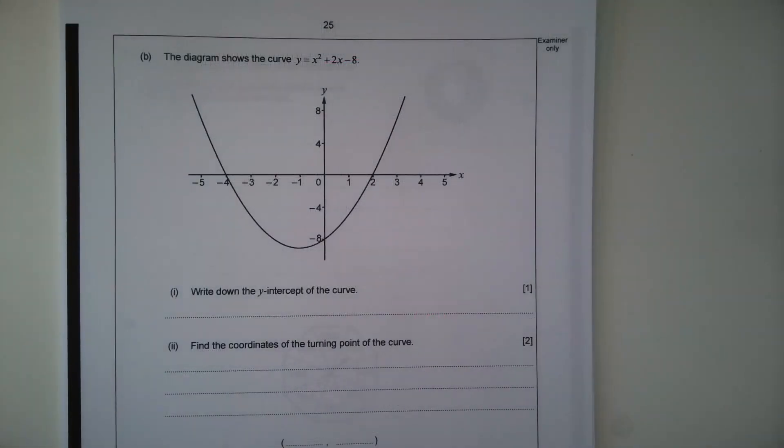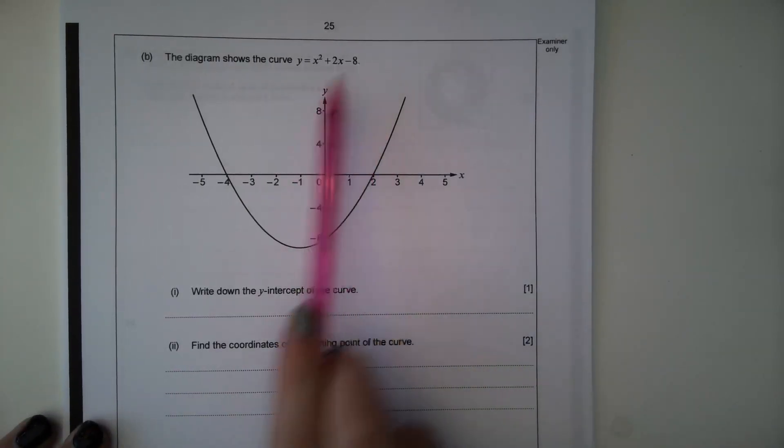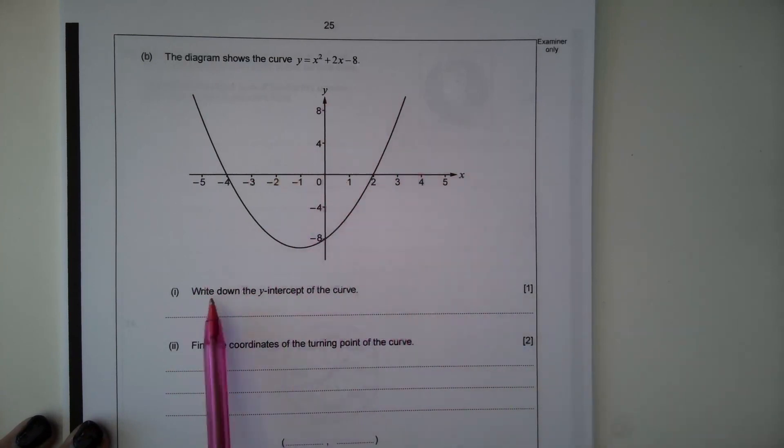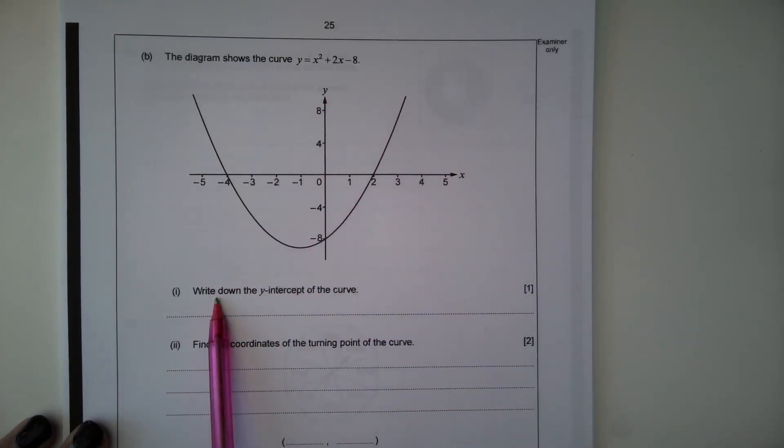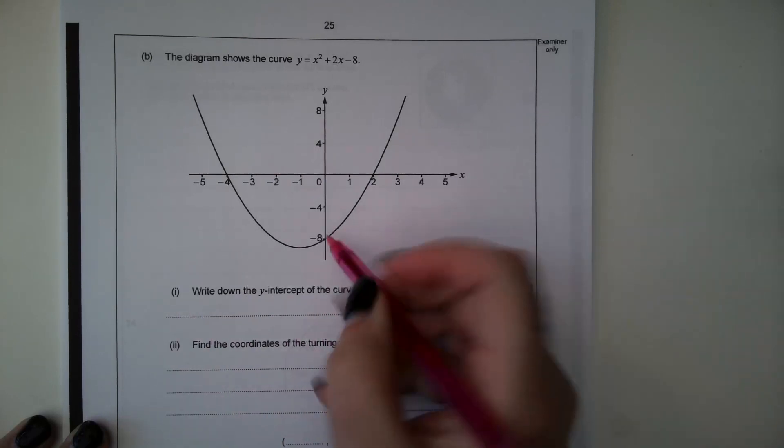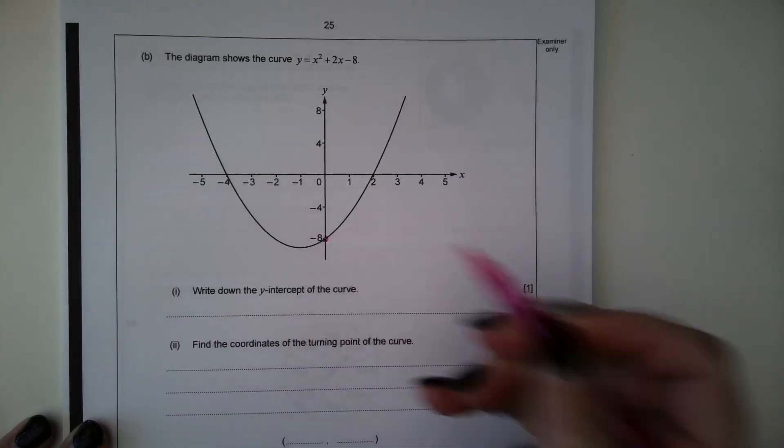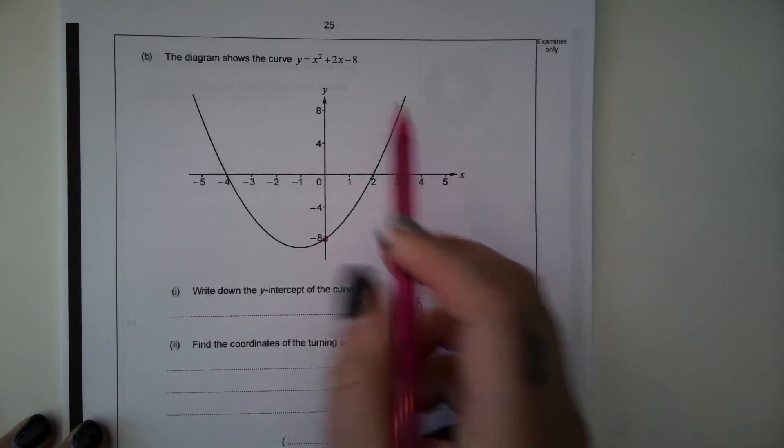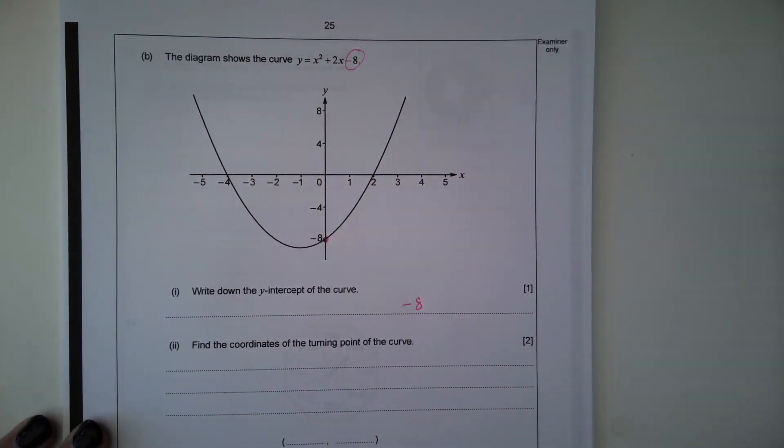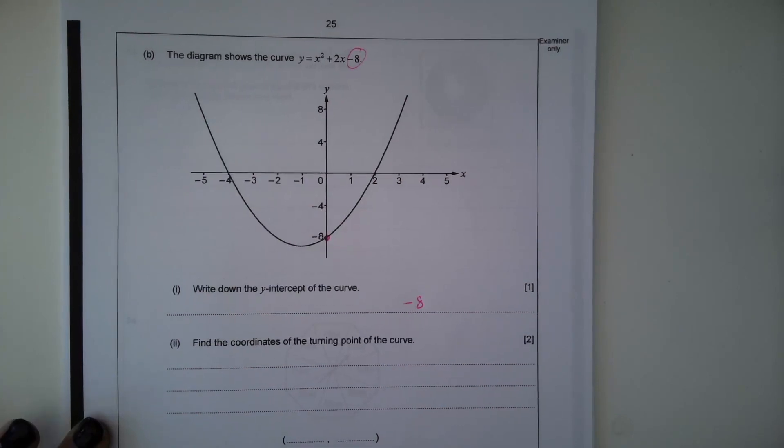Part B. The diagram shows the curve Y equals X squared add 2X subtract 8. So we've got this quadratic curve here. Part 1. Write down the Y intercept of the curve. So the Y intercept is where the curve crosses the Y axis which is here at minus 8. We can also identify that from the equation, that constant that we add or subtract on the end.